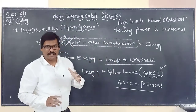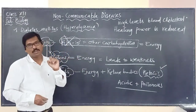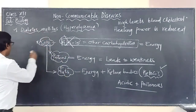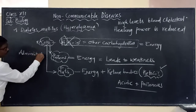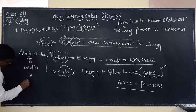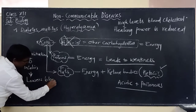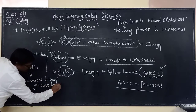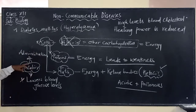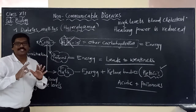To treat diabetes mellitus, insulin is administered. Administration of insulin lowers blood glucose levels and gives relief to the patient. Diabetic patients must take insulin injections to bring their blood glucose levels down.